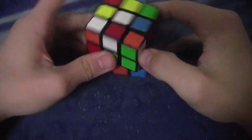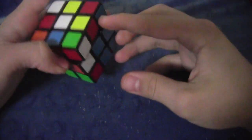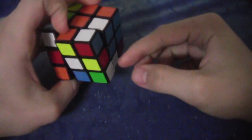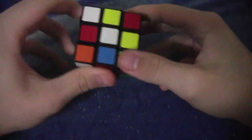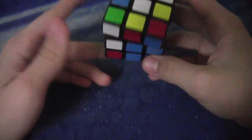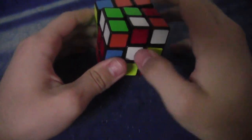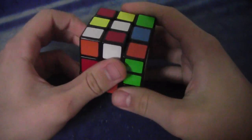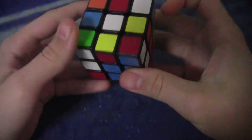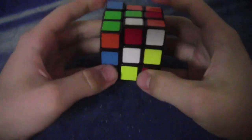You scramble green front, white top, and when I was first inspecting it, I saw obviously this blue. So I put blue on bottom, because cross is going to go on bottom. The inspection for it is Y2 X' so blue's on bottom.